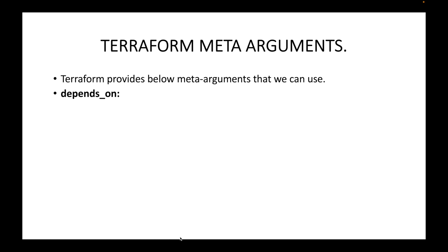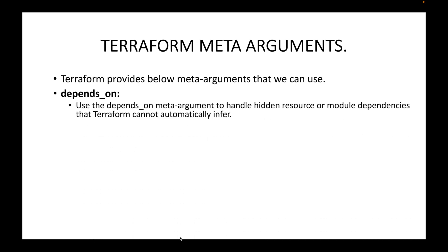We have the depends_on meta argument. By default, Terraform will handle the dependencies when we are creating resources. However, there might be cases where there are hidden dependencies which Terraform will not be able to handle. In that case, we can make use of the depends_on meta argument to tell Terraform to handle those hidden dependencies.